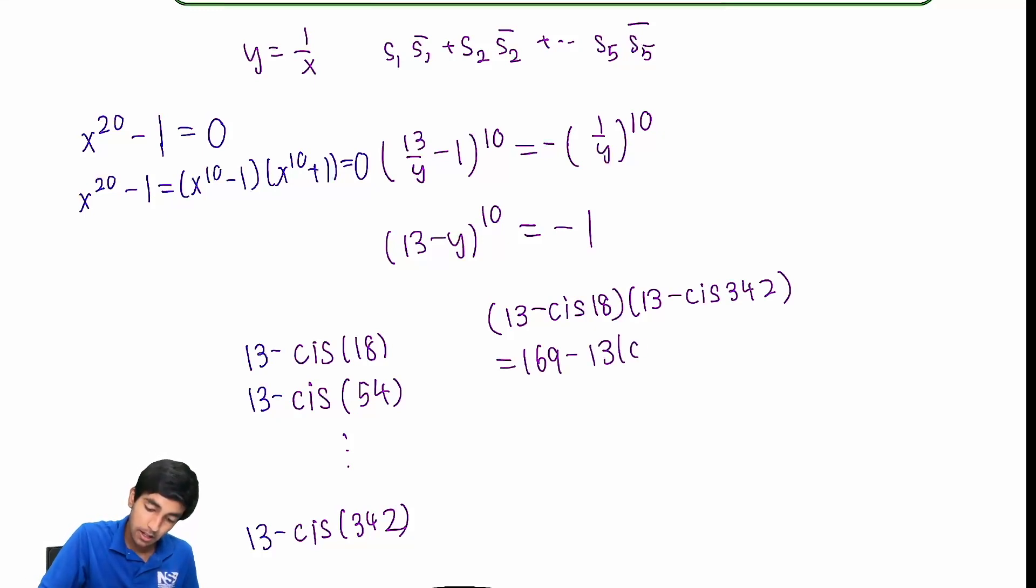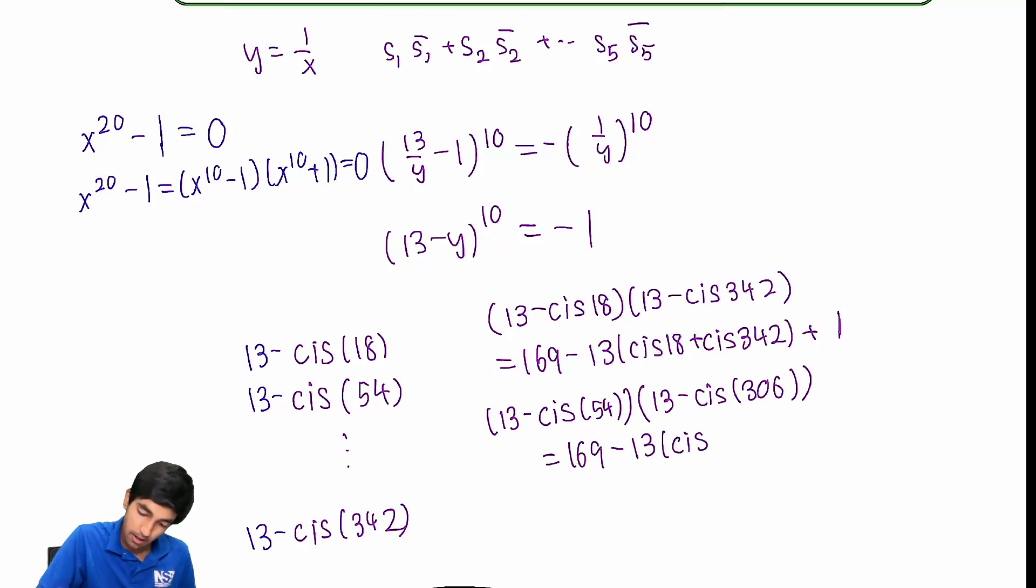And what happens when we expand this out? We get 169 minus 13 cis 18 plus cis 342. And then also plus cis 360, which is nothing but 1. But I'm just going to write this out. Because, you know, this addition formula. And we get that. And similarly, we get 13 minus cis 54. And 13 minus cis, because remember, these are the conjugates. We get 169 minus 13 cis 54 plus cis 306 plus 1. And we keep doing this all the way. In total, we do this five times.